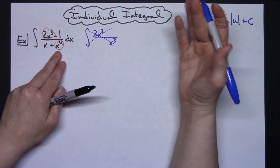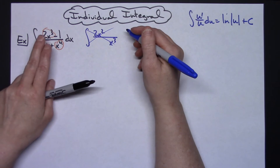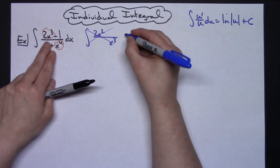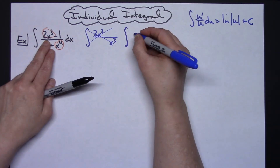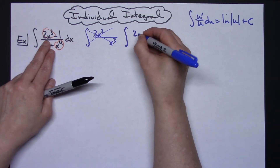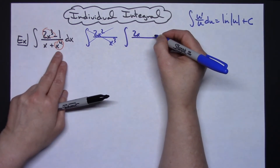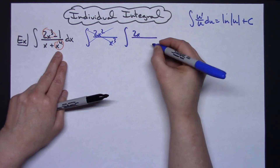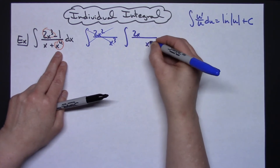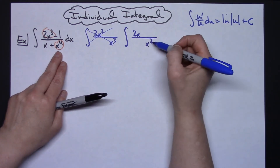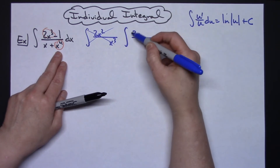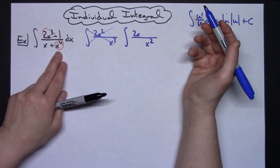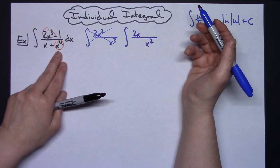Let's try dividing through by x squared. If I take 2x to the third divided by x squared I get 2x. If I take x to the fourth and divide by x squared I get x squared. Now we're getting somewhere, because I can take the derivative of x squared and that gives 2x, which is exactly what we have on top.